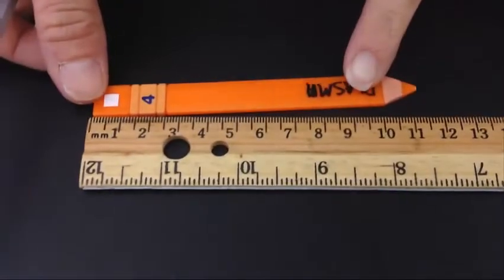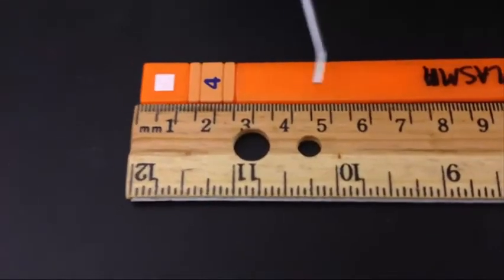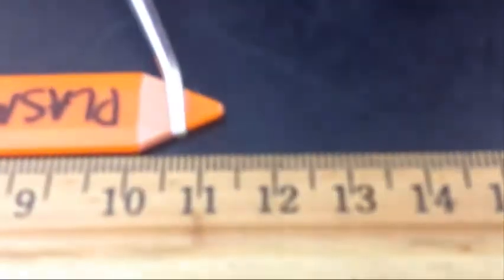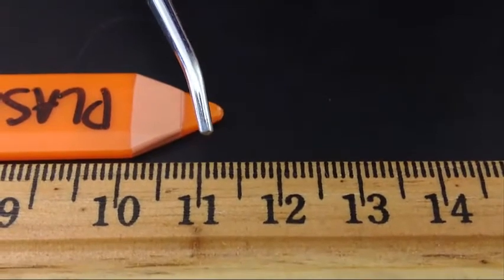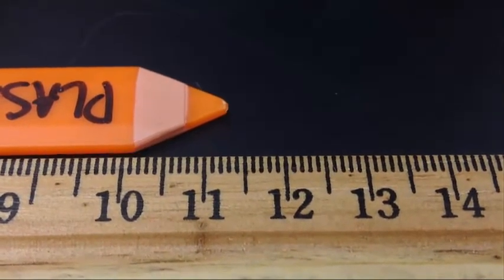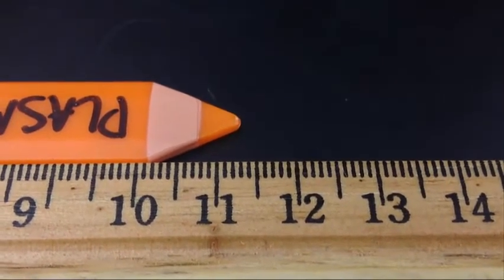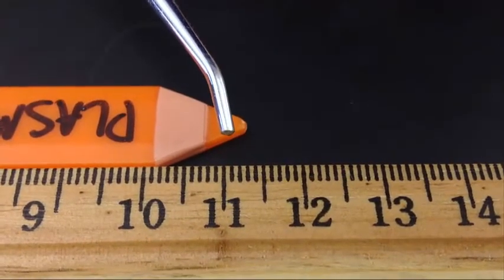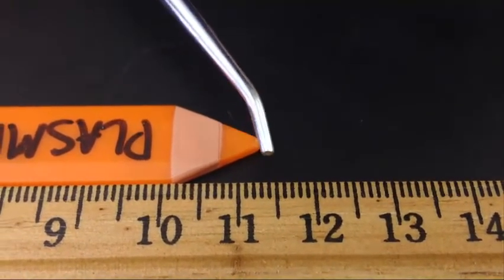For example, when I go to measure this little guy, you'll notice that, again, I lined him up with zero, but he ends, the last whole number that he reaches is 11. So he goes a little bit past 11. So I'm going to have to figure out how many millimeters, or little lines, go past 11. So 1, 2, 3, 4, and I'm going to record my answer as 11.4 centimeters. So if an object is longer than a whole number, any of the millimeters behind that number, for instance, this one went four past it, I would record those after the decimal.